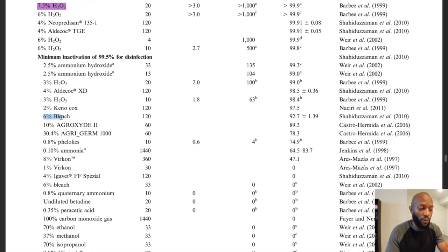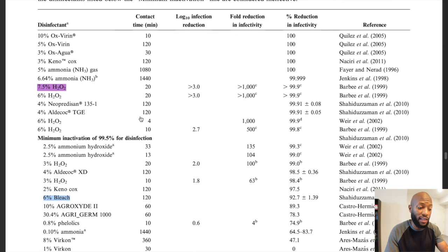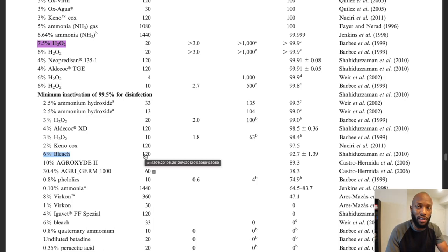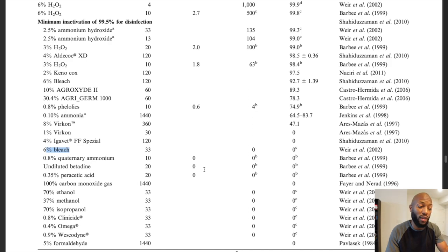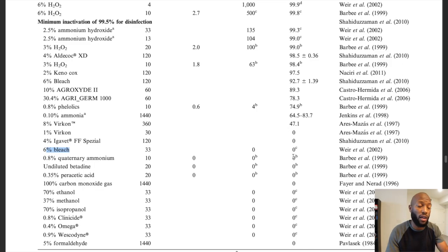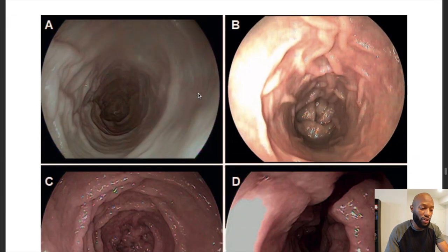Looking at other common disinfectants: six percent bleach tested at a 120-minute contact time had only a 92.7% effectiveness, and six percent bleach at 33 minutes was zero percent effective. Bleach is not something you should be using to get rid of crypto. Other things people use - ethanol and products like chloramine-T - are also not effective in getting rid of crypto. The best thing is hydrogen peroxide: at minimum three percent, but ideally at least six percent.